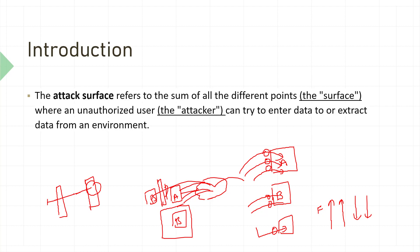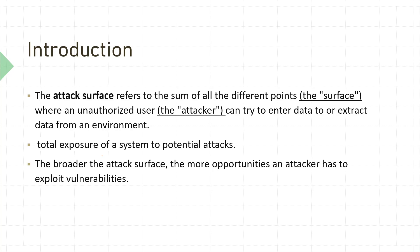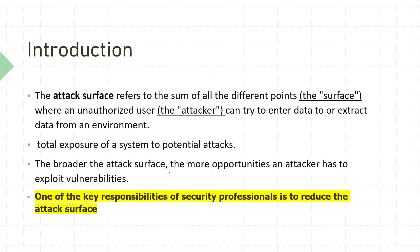At the first gate they do a high-level check for functionality reasons, so there's some possibility of attack — that's why a second detailed layer of security exists. Attack surface is essentially total exposure of a system to potential attack; the broader the attack surface, the more opportunity an attacker has. That's why a key responsibility of security professionals is to reduce the attack surface.